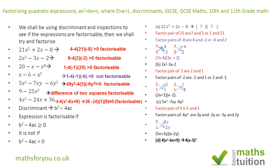For the next expression, we know from the discriminant test that it has only one root — it bounces off the x-axis. This means the factorization is (x minus 3) squared, which gives us the required expression. So (x minus 3) all squared is our factorization for this expression.